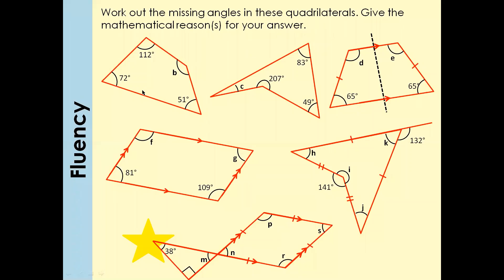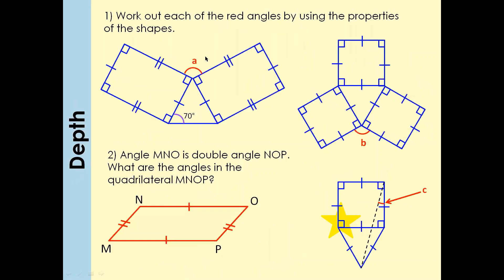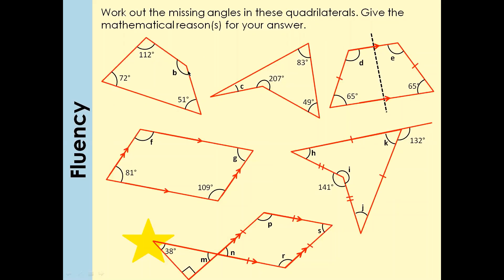Here are some practice questions — pause the video, attempt them, and we'll discuss the answers in a few minutes. For this question with angles 112°, 72°, and 51°: add them all up and take away from 360°. Your answer should be 125°.